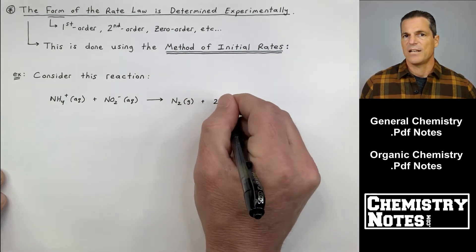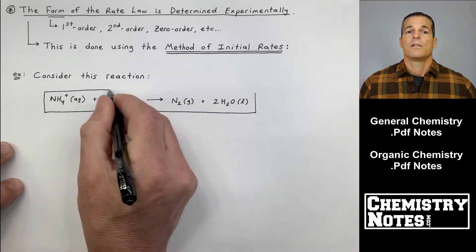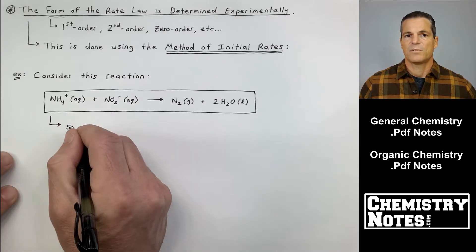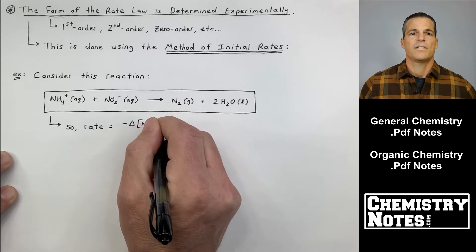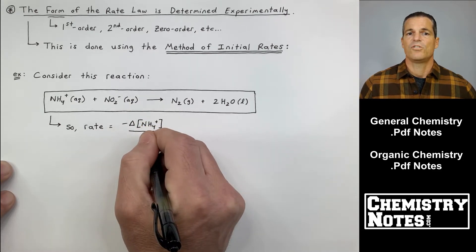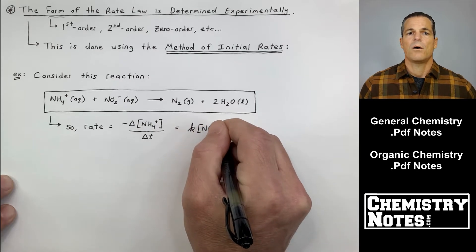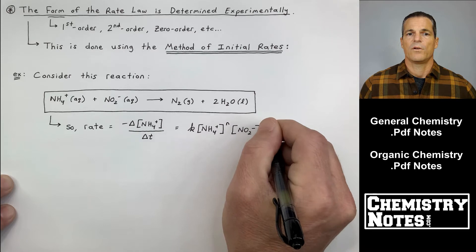This is done using the method of initial rates. We have to be given data to do the method of initial rates. Let's just practice by doing an example. As an example, let's consider this reaction: NH4+ plus NO2- yields N2 plus 2H2O.